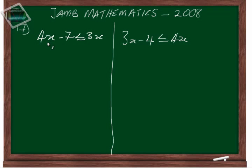To make the x's be on one side, we are going to add 7 to both sides so that we can nullify the 7. So 4x minus 7 plus 7 less than or equal to 3x plus 7, and that will give us 4x less than or equal to 3x plus 7.